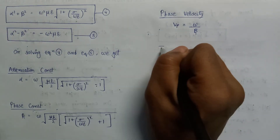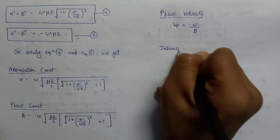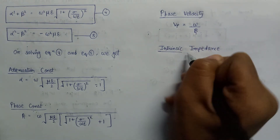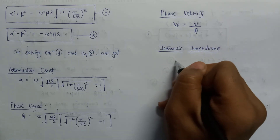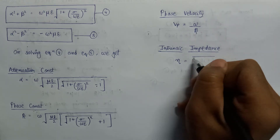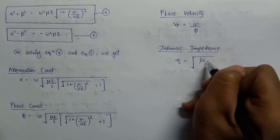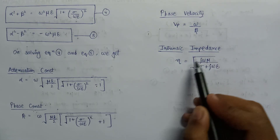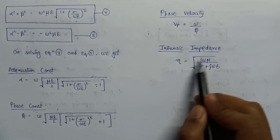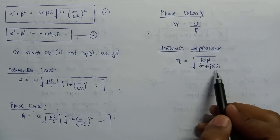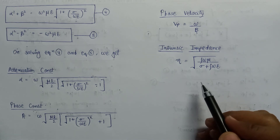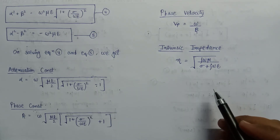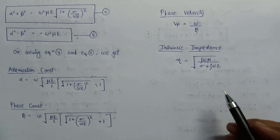And if we discuss about the intrinsic impedance, the expression for intrinsic impedance is eta, which equals the square root of j omega mu over sigma plus j omega epsilon. These are all the basic parameters associated with plane wave. We will use these formulas in the upcoming videos for finding wave propagation and its behavior in different mediums.